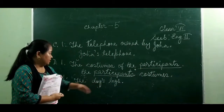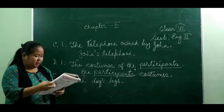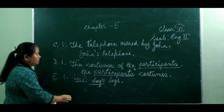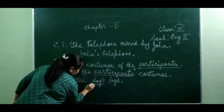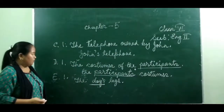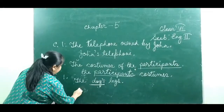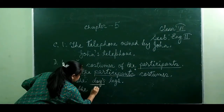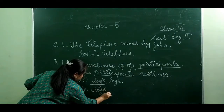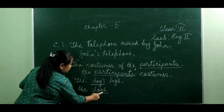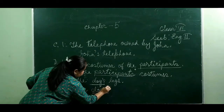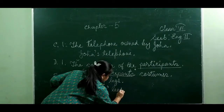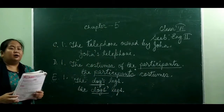Next exercise: make the expression plural. 'The dog's leg' is a singular noun. You have to change it to the plural form. 'Dogs' is the plural of 'dog' — it ends in S, so we need only the apostrophe. We write 'the dogs' legs.'